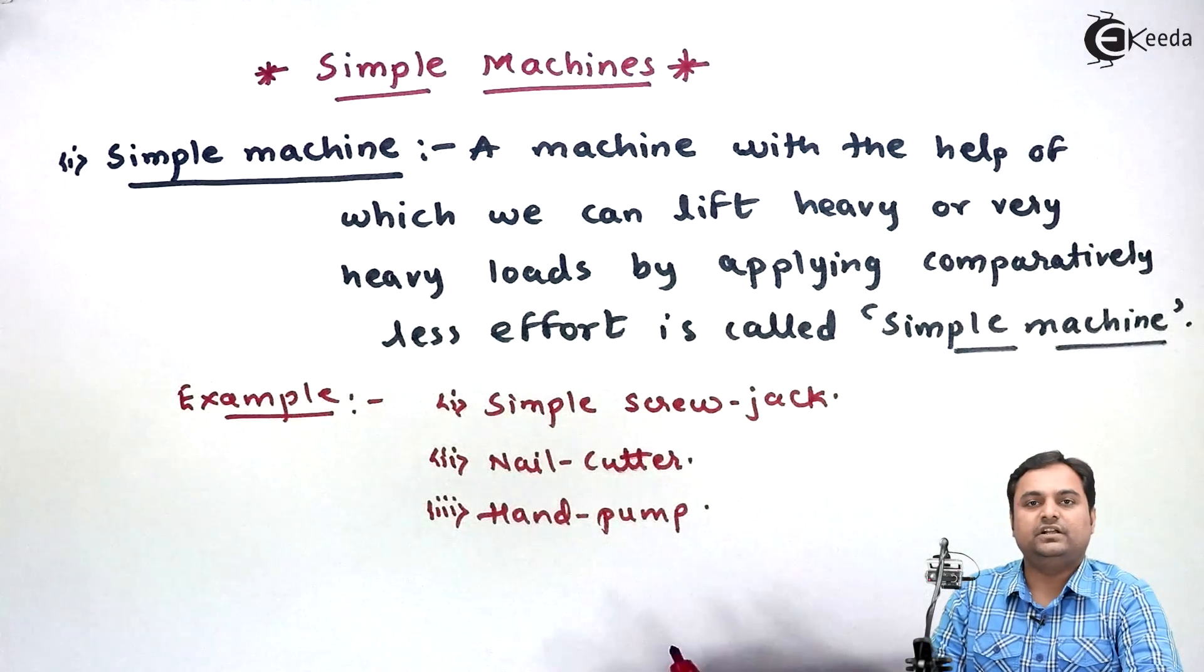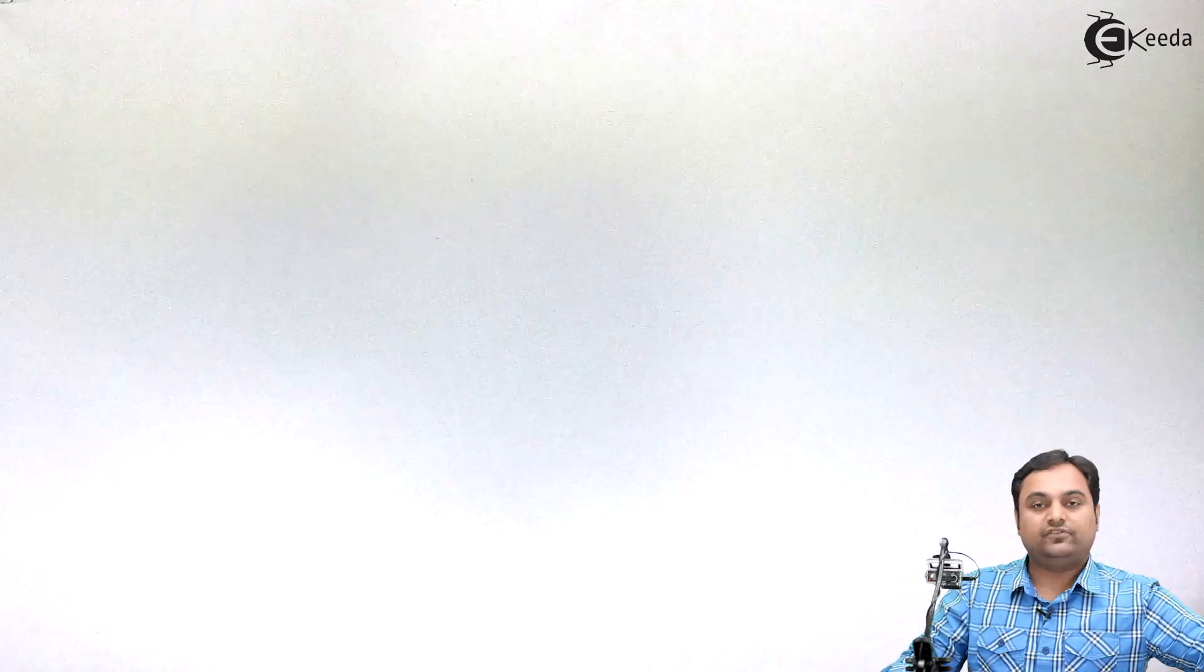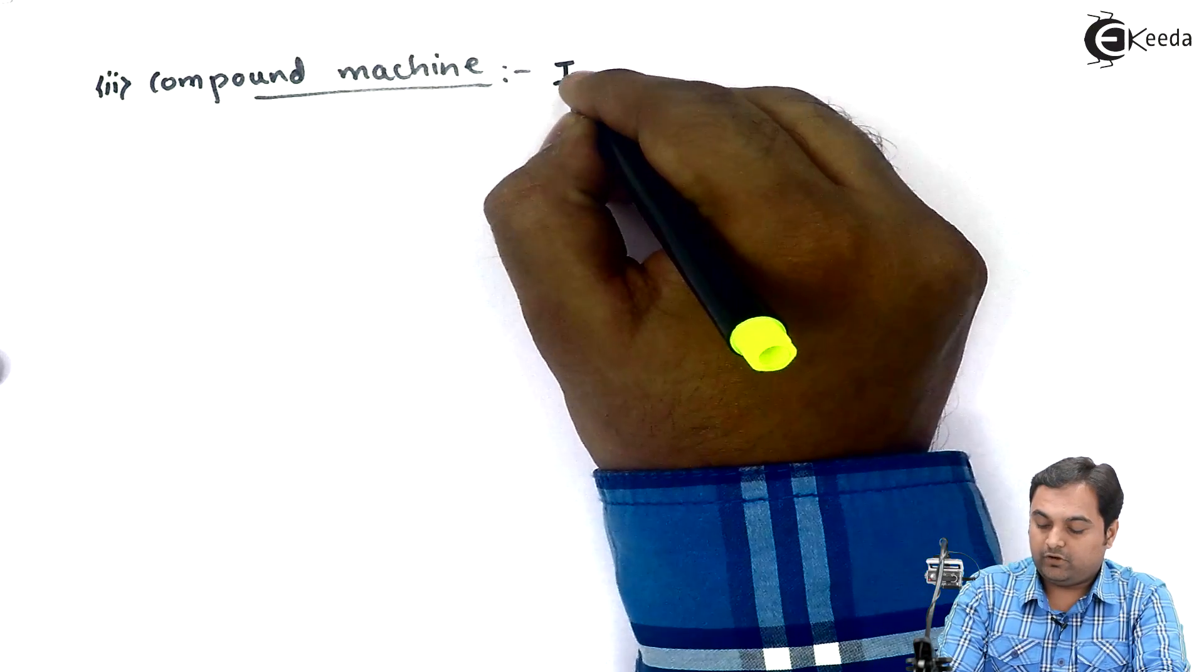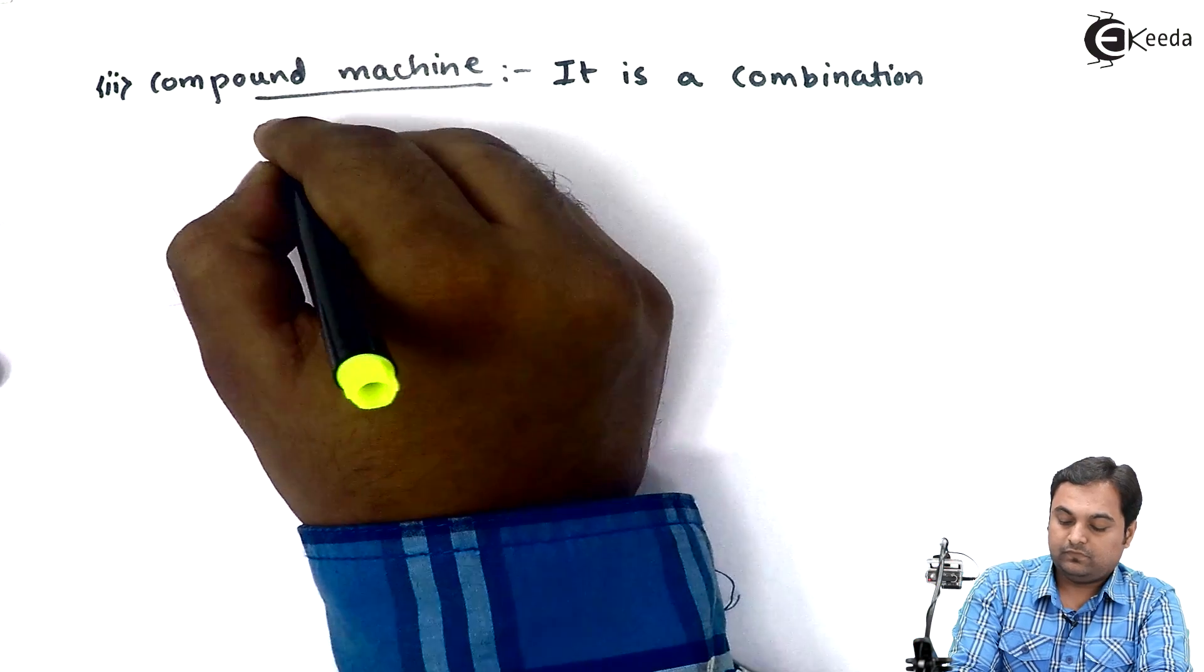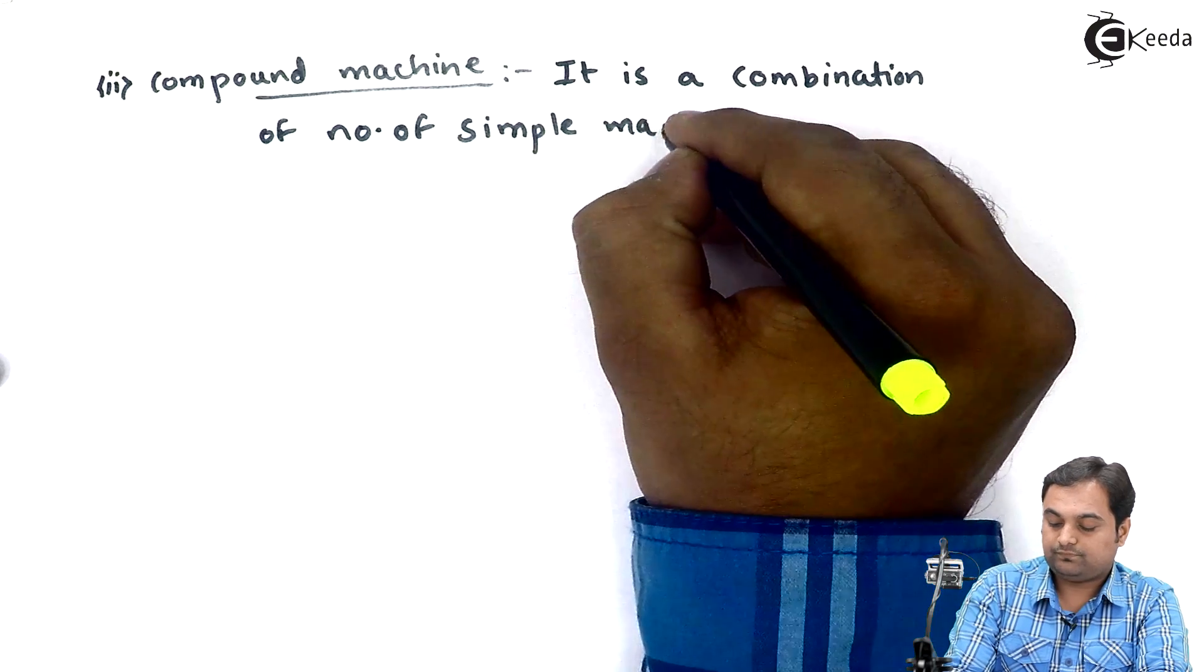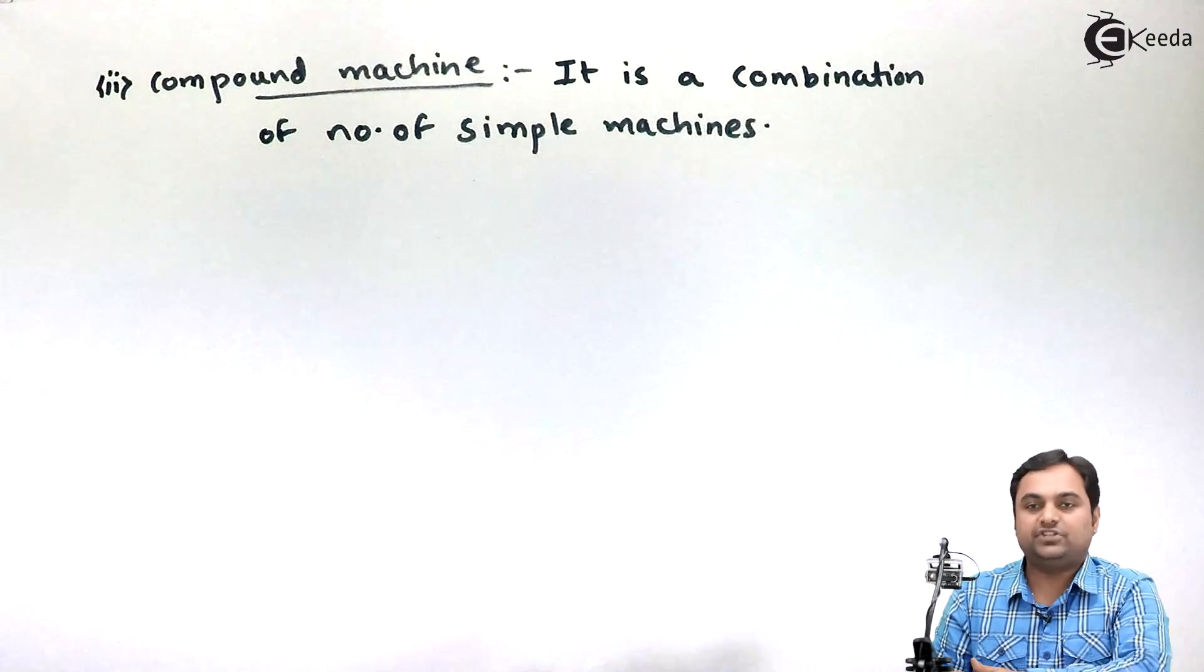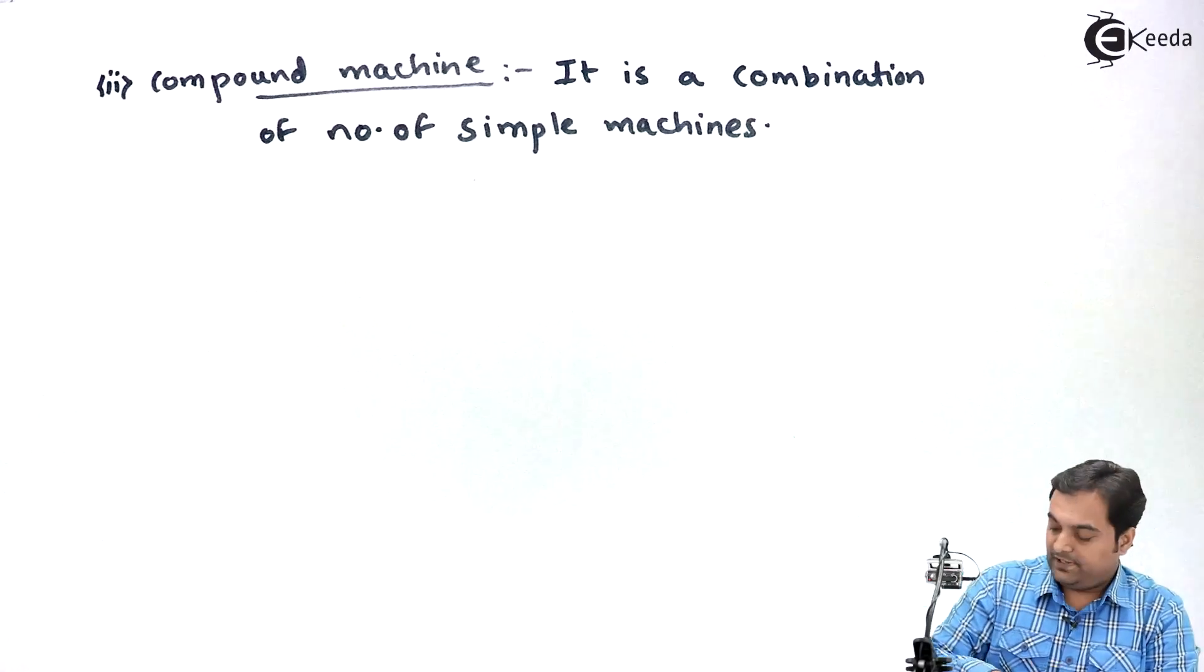So like this we have a number of examples where we apply less effort and lift heavy loads. Next definition is of compound machine. It is a combination of number of simple machines.